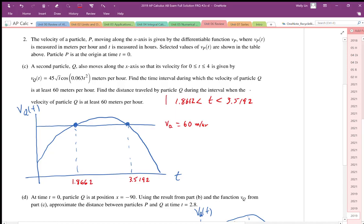So that represents the solution for the first part. This is a time interval. The second part of this question asks, find the distance traveled by particle Q.